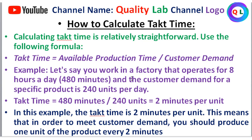With 8 hours a day and a customer demand of 240 units per day, you divide the available production time by the customer demand, which gives you the Takt Time — the rate at which units must be produced.